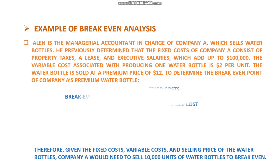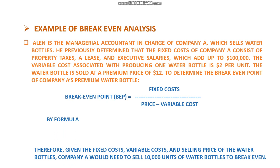This can be calculated by the formula derived above. Break-even point = Fixed Cost divided by (Price minus Variable Cost) = one lakh dollars divided by (twelve dollars minus two dollars) = one lakh divided by ten = 10,000 units. This means the company must manufacture a minimum of 10,000 units of water bottles to break even. After 10,000 units of production, the company will get profit; below that, the company will be in loss.